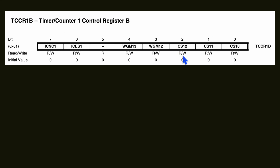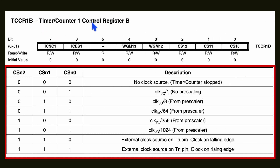There are 3 clock select bits in the register. With these 3 bits you can decide the clock frequency for Timer 1. If they are all 0, Timer 1 is stopped. A value of 1 means no pre-scaling, so 16 MHz is used directly. A value of 2 (binary 010) divides by 8, giving 2 MHz. A value of 3 divides by 64, giving 0.25 MHz. You can scale up to 1024 to reduce the clock frequency further.